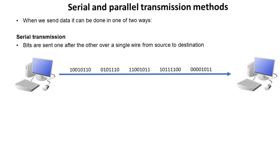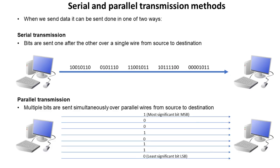When we send data we can do it in one of two ways. We can either send it in a serial way, as shown here, and in this method bits are sent one after the other over a single wire from source to destination. Or we can send information using parallel transmission, where multiple bits are sent simultaneously over parallel wires from the source to the destination.